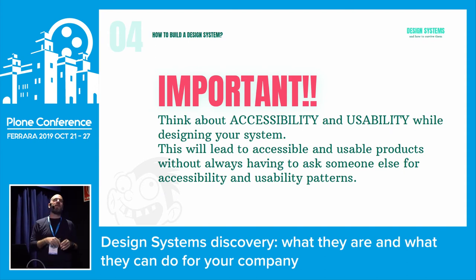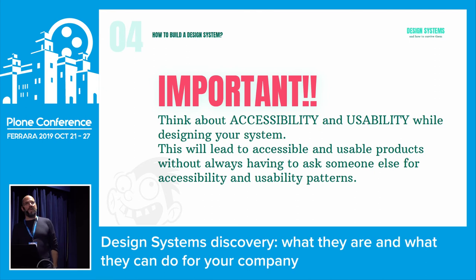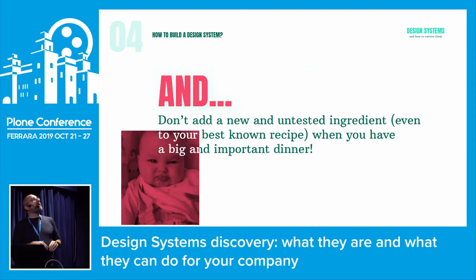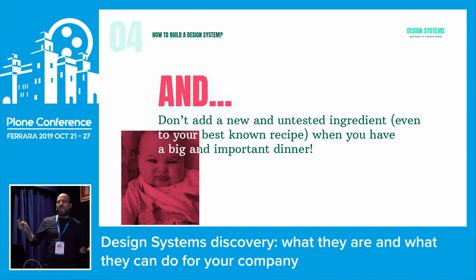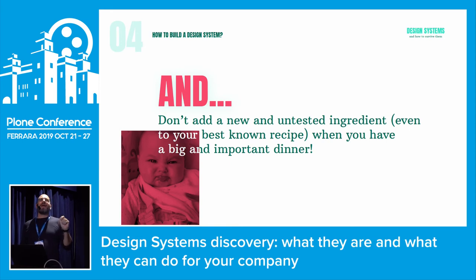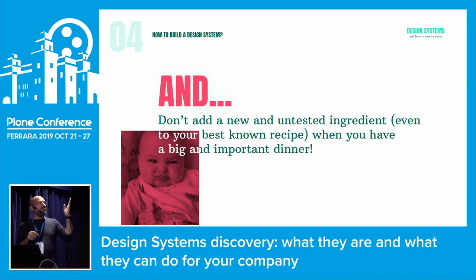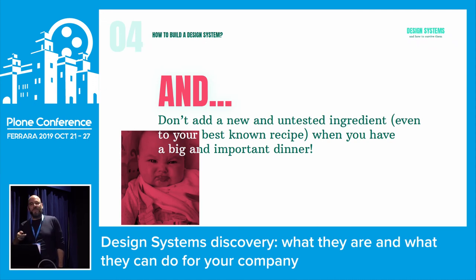Imagine baking a muffin with blueberries inside. Now imagine baking a muffin without blueberries and trying to stick them in after — it's a blueberry muffin, but it's all broken. If you build a design system with accessibility and usability in place, when you build something, it's already accessible and usable. And you never want to add something to a design system that has never been tested — it can break something, break everything, or be unusable, rendering the whole design system a bad one. Don't add a new ingredient to your most important dinner without knowing how it will interact with everything else.